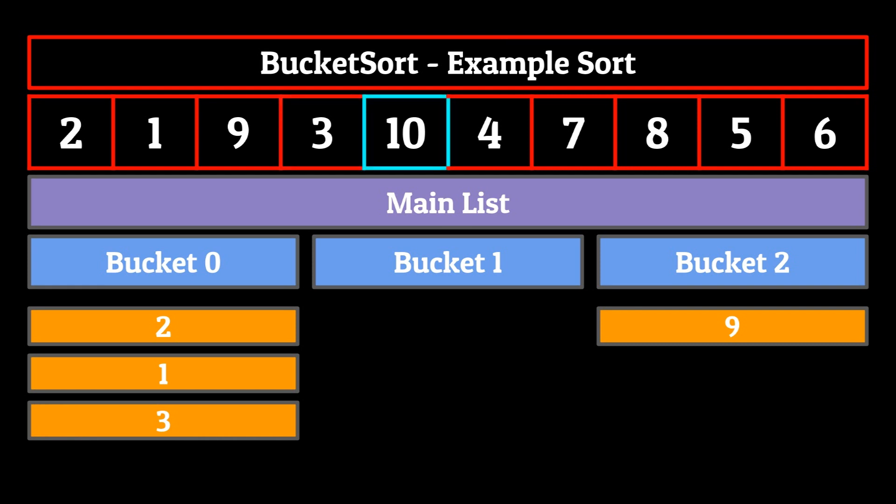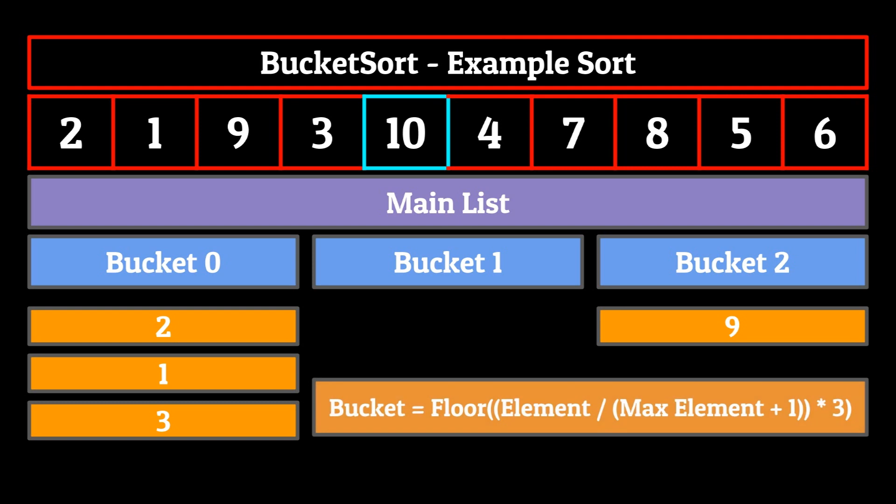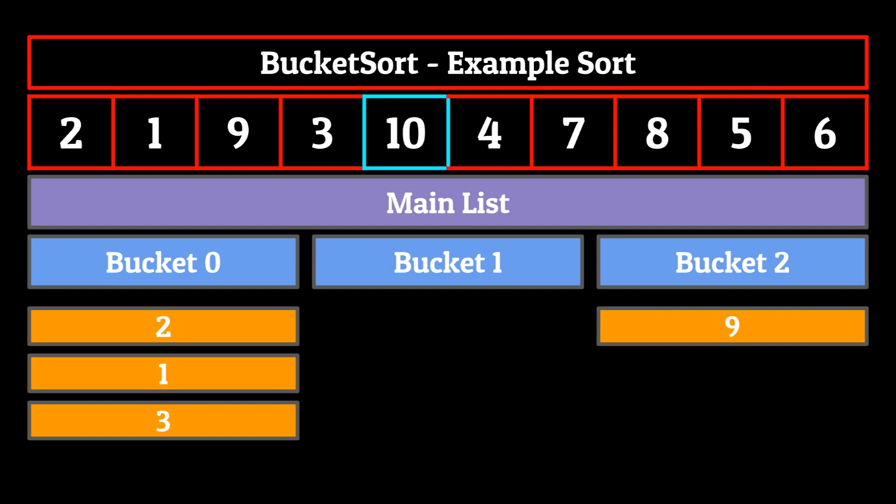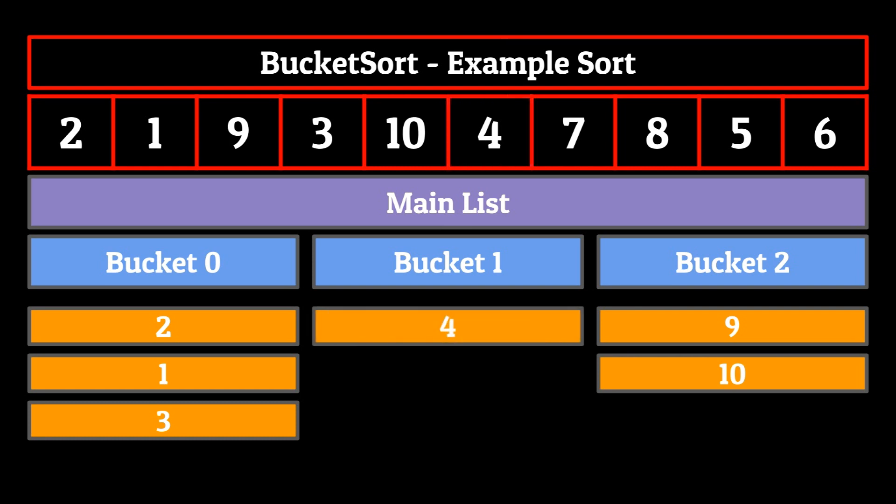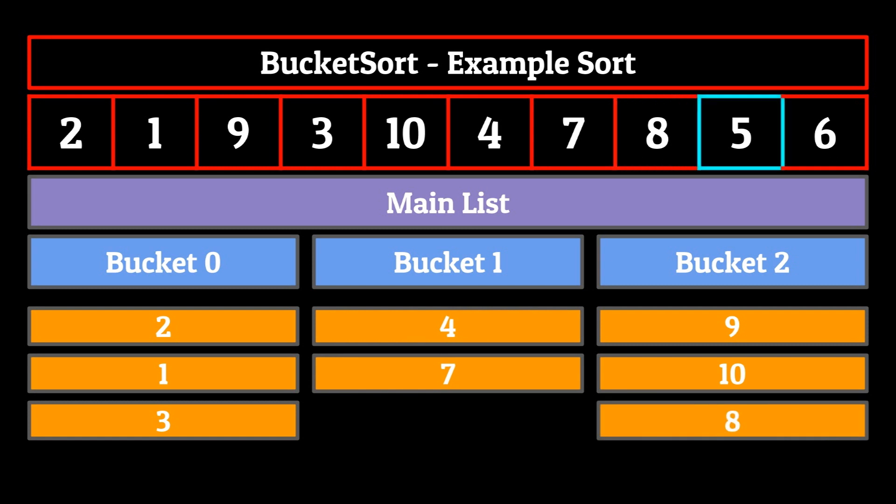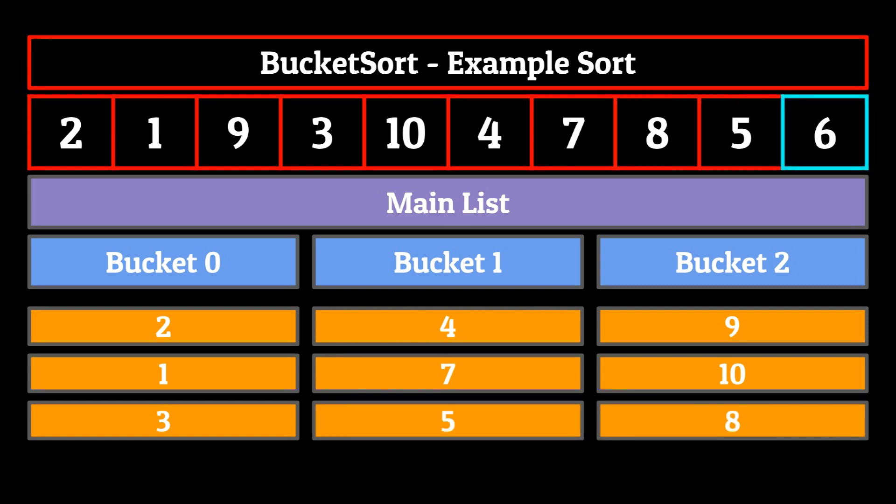Notice that if we don't have that plus one in our formula, this would result in the quantity 10 divided by 10 times three, which is three, the whole number. There is no third bucket, and so this would result in an out of bounds error. That's why we make sure to add one to the max element before we divide the current element.